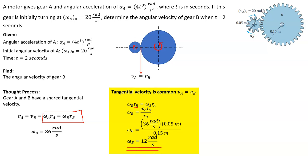That is the angular velocity of gear B: 12 radians per second. You would use this in many different mechanical designs — taking this simple concept of a simple gear train and moving forward to all sorts of interesting types of mechanical designs, particularly gears, pulleys, and so on. Leave your comments, thoughts, and questions, and I will talk to you in the next video.